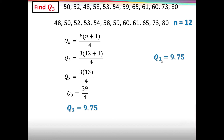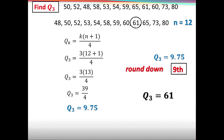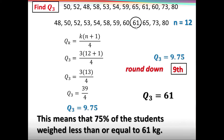Since Q sub 3 is above 50% of the data and our answer is a decimal, we round down: 9.75 becomes 9, so the location is the 9th value. The 9th value in the sorted list is 61. Therefore, Q sub 3 = 61. This means that 75% of the students weighed less than or equal to 61 kilograms.